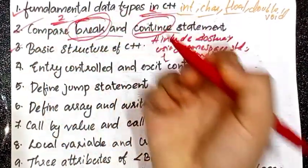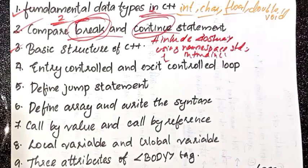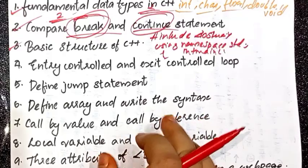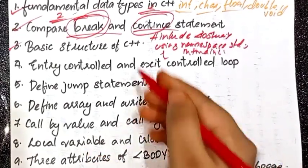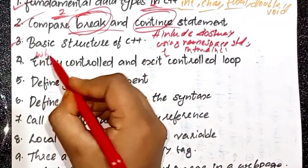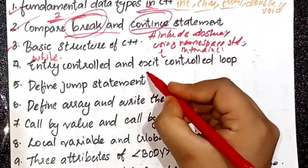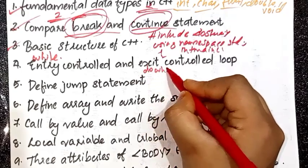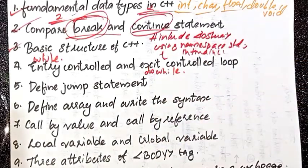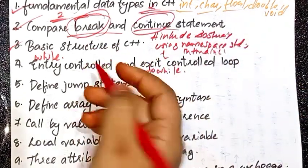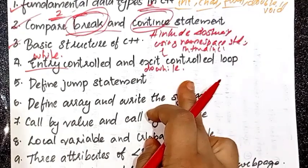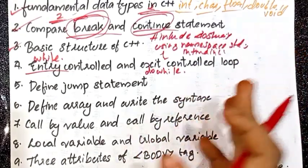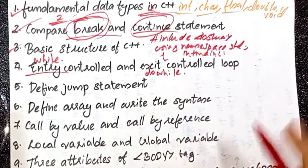Next question: entry control loop and exit control loop. We are going to explain the difference. When we are ending a while loop, we have one example. Entry control loop — one example is the while loop. Exit control loop: the condition is checked before the execution of the body. You can check if you execute the body in the loop.